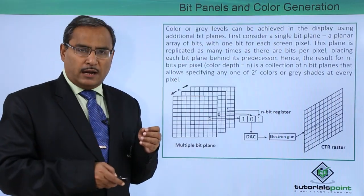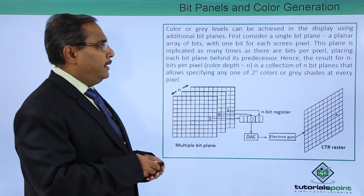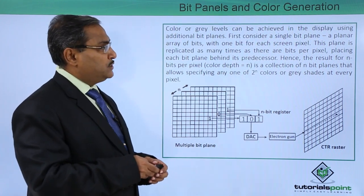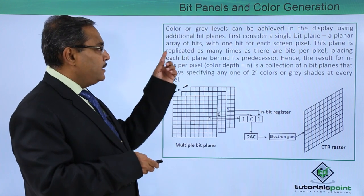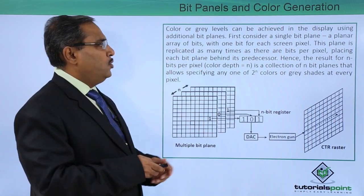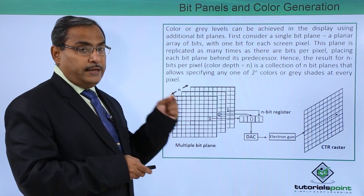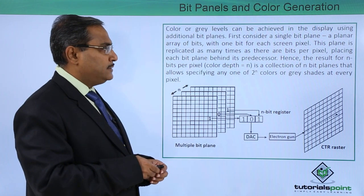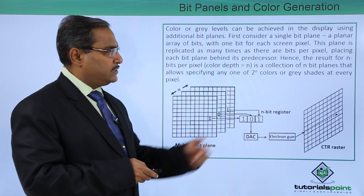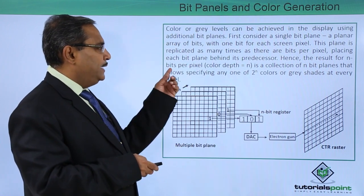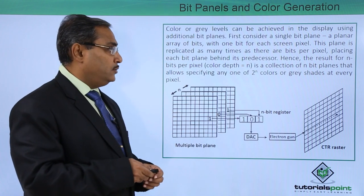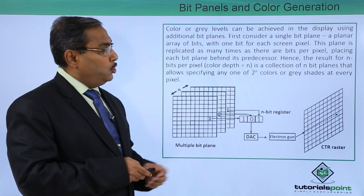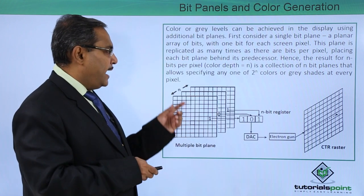In case of color or grey levels, color or grey levels can be achieved in the display using additional bit planes. Consider a single bit plane — a planar array of bits with one bit for each screen pixel. This plane is replicated as many times as there are bits per pixel, placing each bit plane behind its predecessor. Hence, the result of n bits per pixel — that is, color depth equals n — is a collection of n bit planes that allows specifying any one of 2 to the power of n colors or grey shades at every pixel.